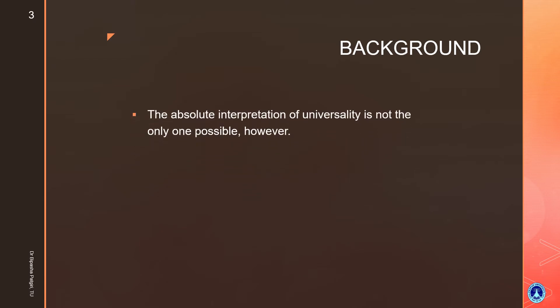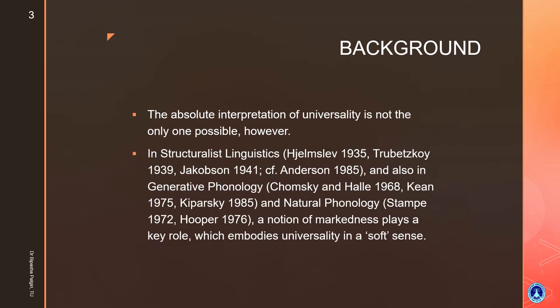Next, we have a few more ideas and assumptions about universality. The first is that the absolute interpretation of universality is not the only one possible. There may be some exceptions, some conditions where even universal principles are violable in certain languages or in certain forms — there exist some gaps or exceptions to universality.